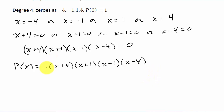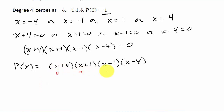We also have to multiply this by some constant a. When I plug 0 in for x I have to make sure I get the answer of 1. Now a may be 1, or it may have to be something else. If I don't have the a and I plug 0 in for x to each one of these, this is going to equal 16 — which is not 1 — and that's why we need that a there.